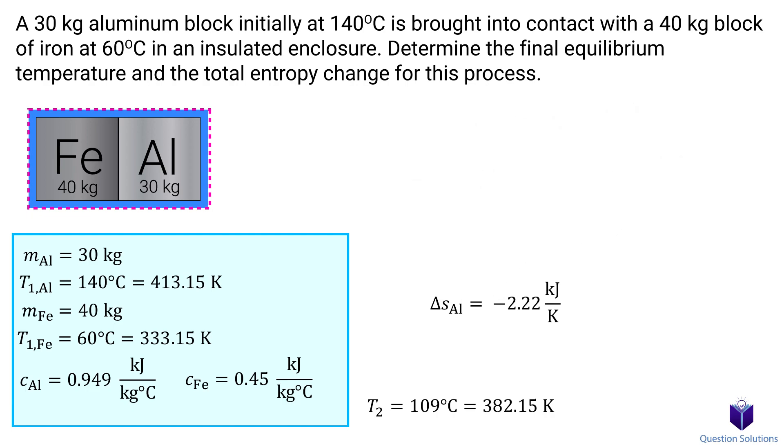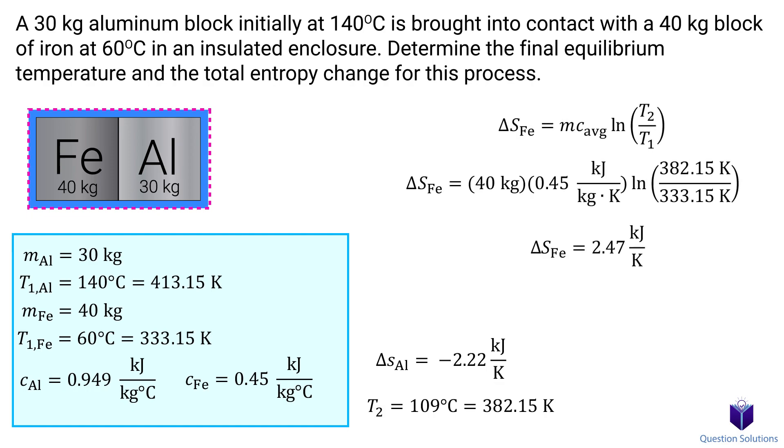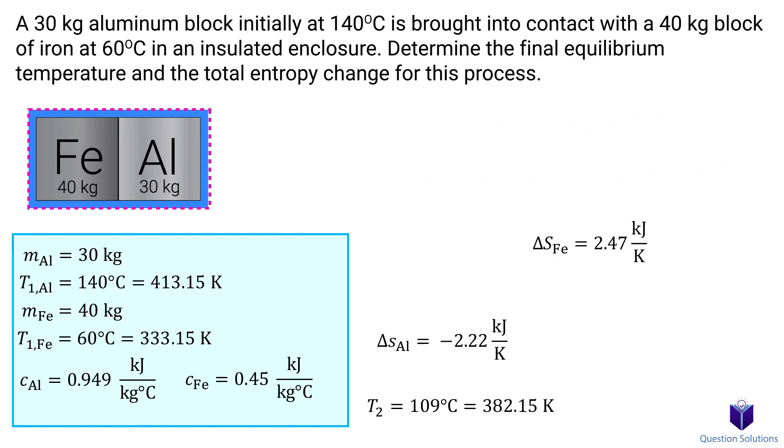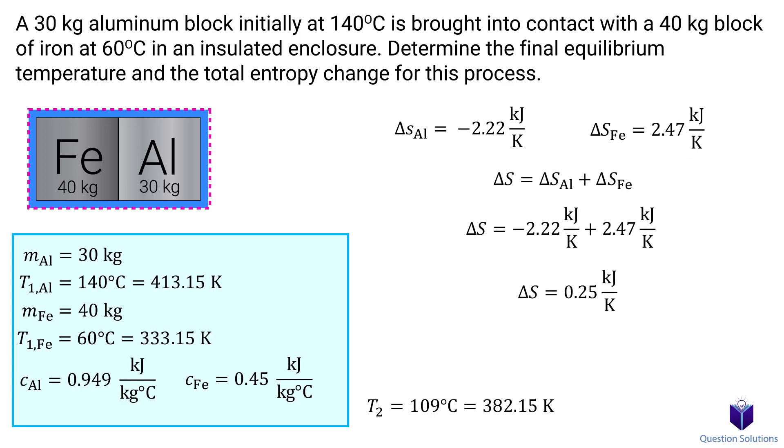Next, we can tackle the iron block. Let's plug our values in and solve. Now that we have both values, let's add them together to get the total entropy change. And that's our answer.